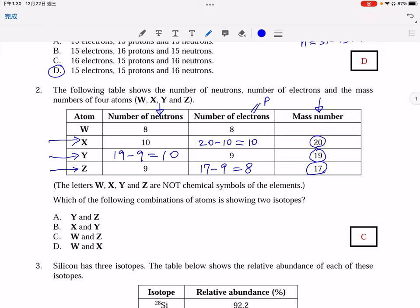So what we have to locate for isotopes is, remember the definition, isotopes should have the same number of protons but different numbers of neutrons. So it is obvious that C is the answer.